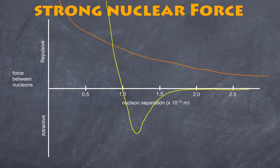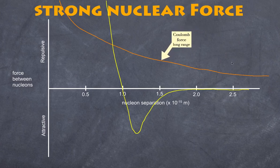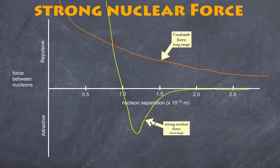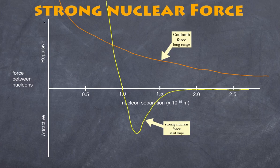So we now have two key forces: the Coulomb force, which is long-range and always present even if weak at large distances; and the strong nuclear force, which is very short-range. If two protons are under one femtometer apart, they experience two repulsive forces simultaneously — with values up to 10⁴ newtons — and cannot coexist. On the right-hand side of the graph, beyond about 2.5 femtometers, the strong nuclear force is attractive but extremely weak, so the electrostatic repulsion dominates and the protons repel each other.